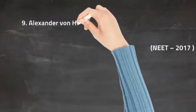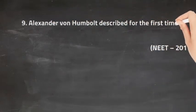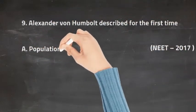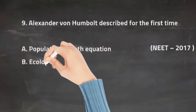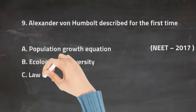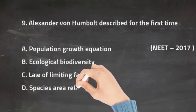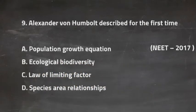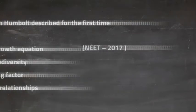Q9: Alexander Von Humboldt described for the first time — Option A Population Growth Equation, Option B Ecological Biodiversity, Option C Law of Limiting Factor, and Option D Species Area Relationship. The right answer is Option D, Species Area Relationship.